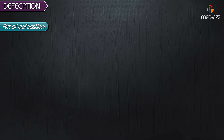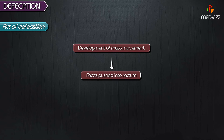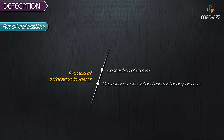Act of Defecation. There is development of mass movements. The feces is pushed into the rectum and the defecation reflex is initiated. The process of defecation involves contraction of the rectum and relaxation of both the internal and external anal sphincters.